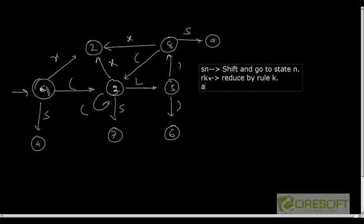Third is A, which means accept. And fourth is Gn, which means go to state n.